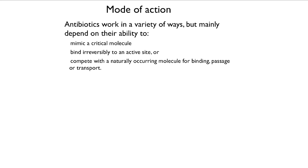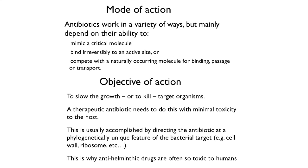They work in a number of ways, but they mainly work by mimicking a critical molecule, by binding to an active site irreversibly, or by competing with some naturally occurring molecule for binding, passage, or transport. So basically they go into bacterial metabolism at an important point and mess it up. The object is to slow the growth or to kill the bacteria. A therapeutic antibiotic that you use in a human needs to do this with minimal toxicity in the host, and this is usually accomplished by picking out some feature of the bacterium which is unique to bacteria and viruses and which doesn't occur in eukaryotes.